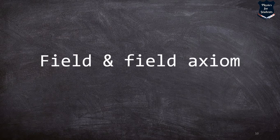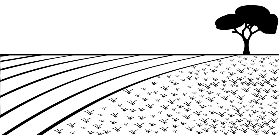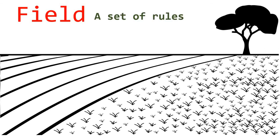Now let us go ahead and understand what is a field and a field axiom. Before I proceed, I want to show you a very abstract kind of figure. Whenever we close our eyes and think of a field, what comes to mind is a wide expanded area with grass all around, trees, and people playing and resting. So a field in mathematics is any object that follows the rules — a field is a set of rules.